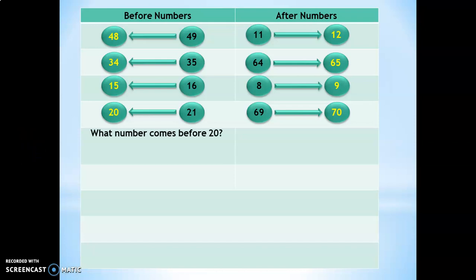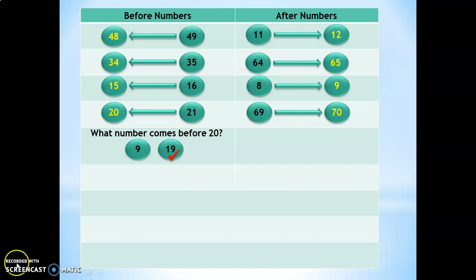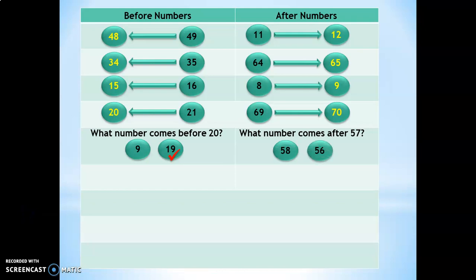You could give your question in a sentence like: 'What number comes before 20?' and give the answer as a choice — is it 9 or 19? The answer is 19. These kinds of questions will help the child improve their reading and comprehending capacity, as the child will think before choosing the correct answer. Similarly: 'What number comes after 57 — 58 or 56?' The correct answer is 58.